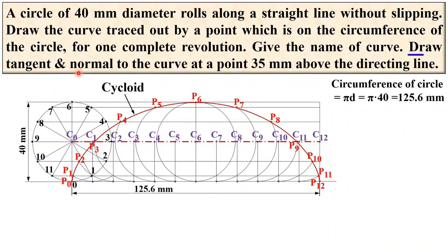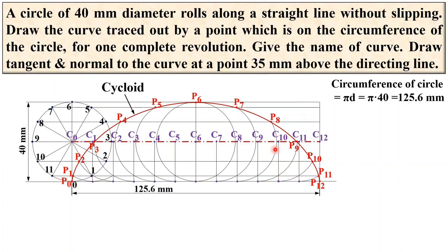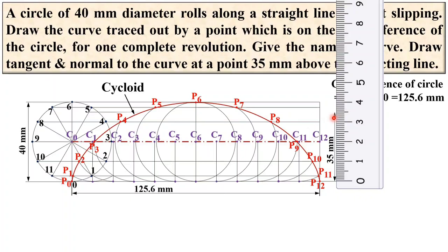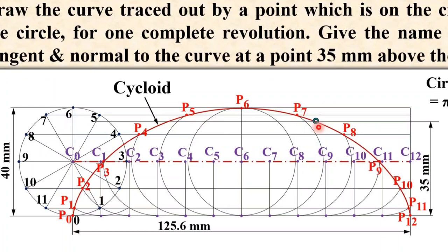Now the third task: draw tangent and normal to the curve at a point 35 mm above the directing line. This is the directing line, and 35 mm above it gives a line that cuts the cycloid at two different points. You can draw the normal and tangent at either of these two points. Let us say we draw the tangent and normal at this point — give it the name V.